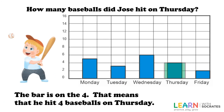How many baseballs did Jose hit on Thursday? The bar is on the four, and because of that he hit four baseballs on Thursday.